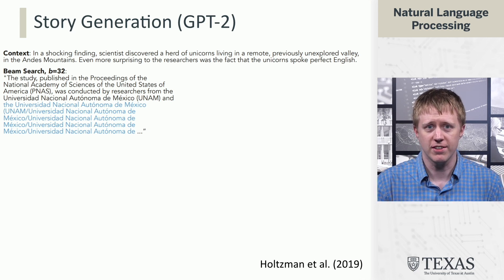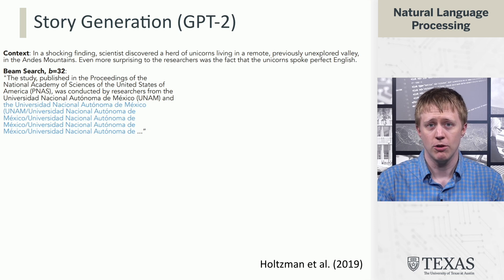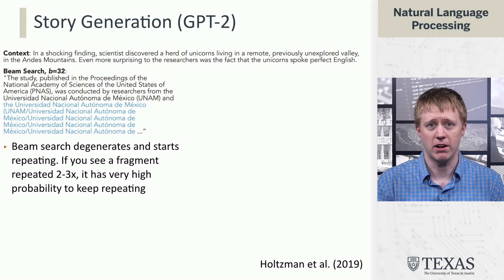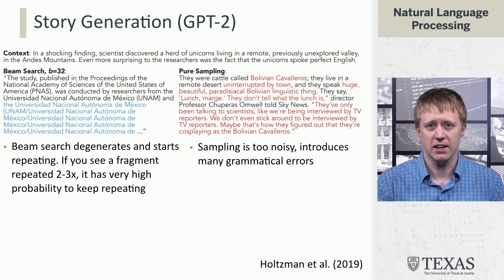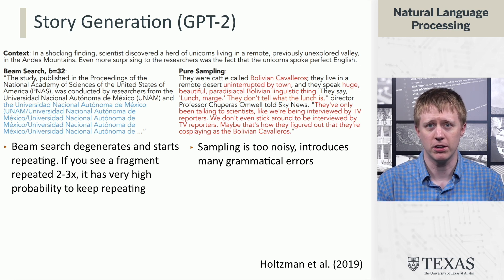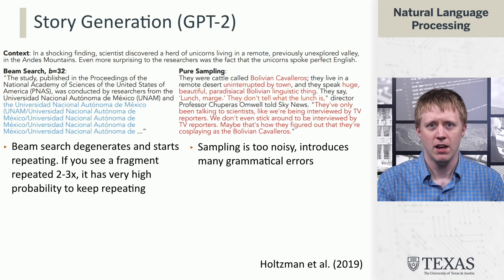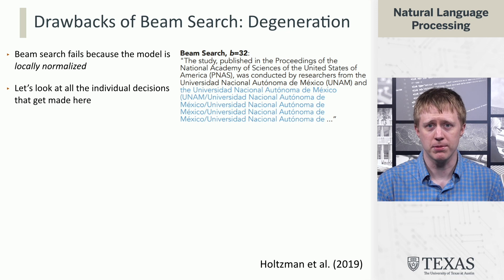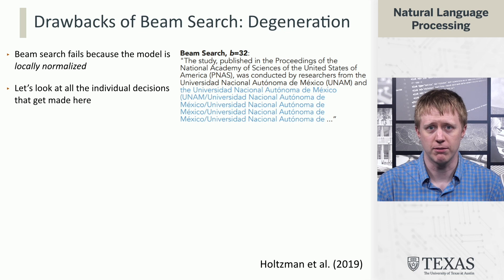Beam Search eventually gets stuck in a very interesting loop, where it just keeps repeating the name of a university again and again. This is exactly the kind of case where we might say this is somehow not random enough. So then we can consider sampling. And if you do sampling from the model's distribution, you end up with stuff that looks quite weird — like "they live in a remote desert uninterrupted by town" — and there are lots of grammatical errors. This phenomenon with Beam Search is called degeneration, and it arises from the structure of the language model.